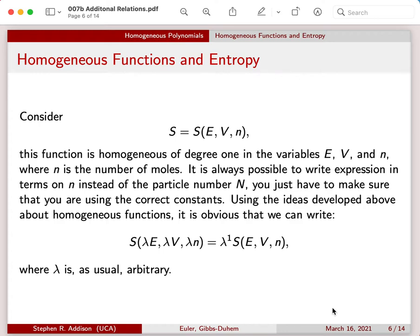Using the idea on the previous slide, I'm going to say that if we start with a function of E, V, and n, and we multiply each of those terms by a scale factor lambda, then because E, V, and n are all homogeneous of degree one, we can find the new value of the entropy just by multiplying entropy by the scaling factor and entropy raised to the power one, because these are homogeneous of degree one in this particular case.